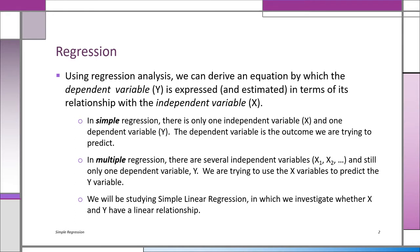In simple regression, you only have one x variable, one independent variable — that's what we're going to learn in this course. In more advanced courses, you'll learn what's called multiple regression, where you have several independent variables: x1, x2, x3, etc. We're still trying to do the same thing — using the x variables to predict the y variable — but if you have several x variables, it gets very complicated. It becomes a matrix problem, but the computer handles that.